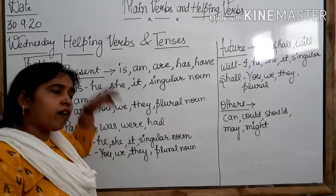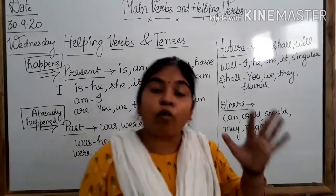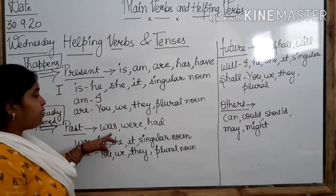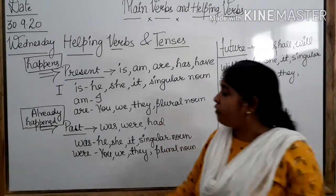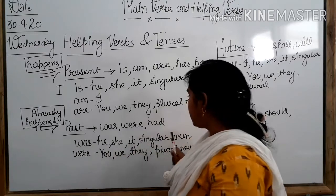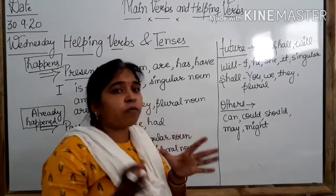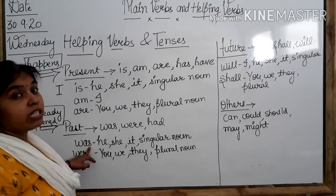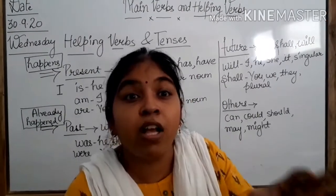Now, come forward to the next one — past tense. The things which had already happened — whatever things were done yesterday — that will come under past tense. Here we will use 'was' and 'were' as helping verbs to make sentences. The groups remain the same: he, she, it, and singular noun use 'was.' When we use 'was' as a helping verb, it means we are making a sentence of past tense.